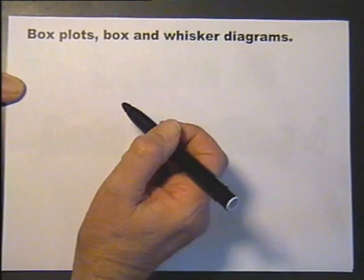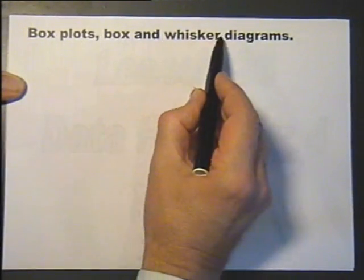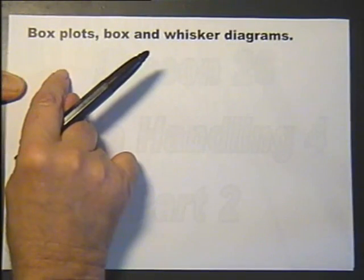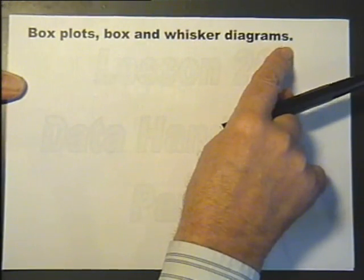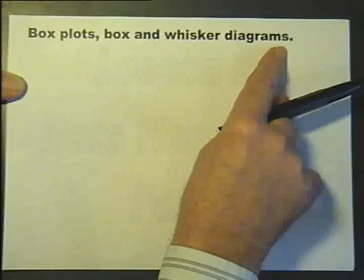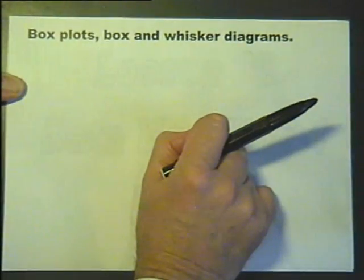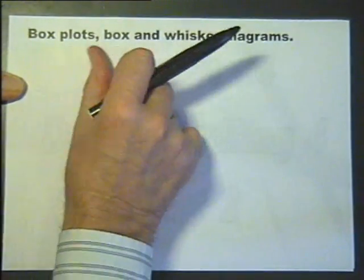This data handling lesson is going to be about box plots, box and whisker diagrams. They're the same thing. Some books call them box plots, some books call them box and whisker diagrams. Some teachers call them box plots, some teachers call them box and whisker diagrams. What do you think of that? I wish they'd make their minds up. But hey-ho, there you go.